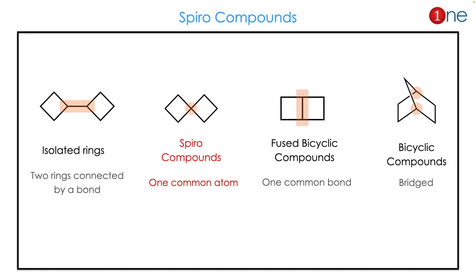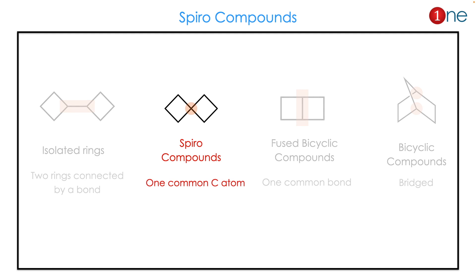What are spiro compounds? There are four different kinds of compounds known in terms of fused compounds: normally isolated rings, where carbon atoms are connected through a single bond; spiro, where carbon atoms are connected through a middle carbon; fused, where rings are connected through a middle bond; and bicyclic, where three cyclic systems are in a single system. Our sole interest here is spiro compounds — a cyclic system connected through a single carbon.